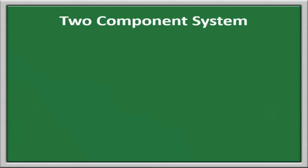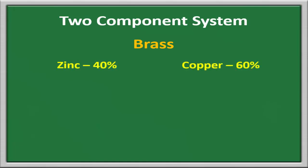Hello friends, today we are learning two-component systems. The first question that arises is: why should we learn two-component systems? If I take brass for example, brass contains 40% zinc and 60% copper. But how do we get to know that the ratio of zinc and copper is 40 to 60?